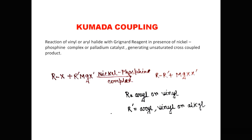The Kumada coupling reaction is the reaction of vinyl or aryl halide with a Grignard reagent in the presence of a nickel or palladium catalyst, generating an unsaturated cross-coupled product. This is the general scheme: one aryl or vinyl halide reacts with a Grignard reagent in the presence of nickel or palladium catalyst to give R-R′ as the desired product. The byproduct is magnesium XX′. Here R may be aryl or vinyl, and R′ may be aryl, vinyl, or alkyl.